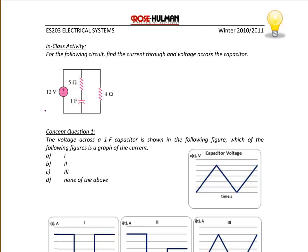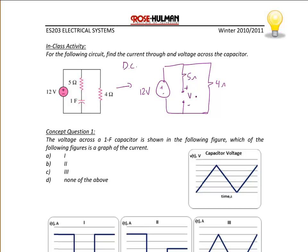Let's analyze a circuit with a capacitor under DC conditions. We have a 12 volt source, a 5 ohm resistor in series with a 1 farad capacitor, and that combination in parallel with a 4 ohm resistor. Under DC conditions, we redraw the circuit with the capacitor as an open circuit: 12 volts, 5 ohms, the open circuit, and the 4 ohm resistor. The 5 ohm resistor has no current flow and therefore no voltage drop, so it is effectively not there. The current through the capacitor is 0 amps, and the voltage across the capacitor is 12 volts.